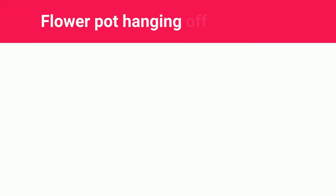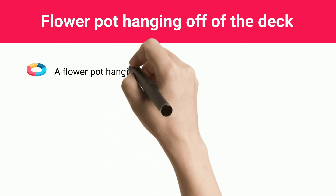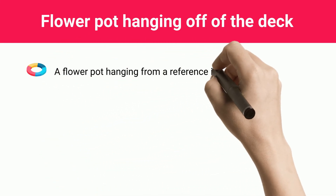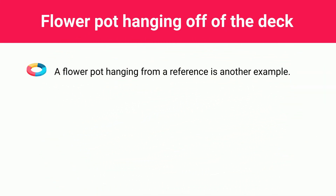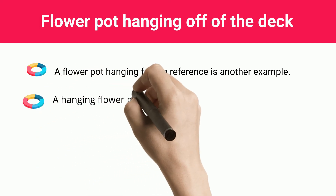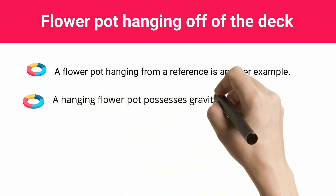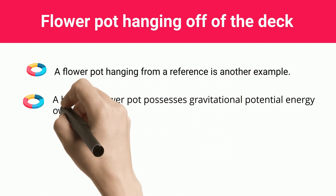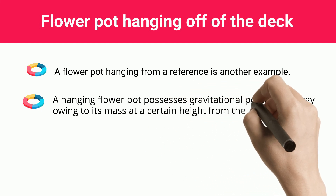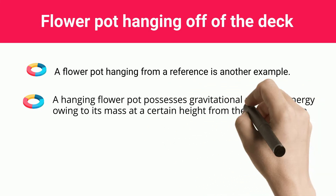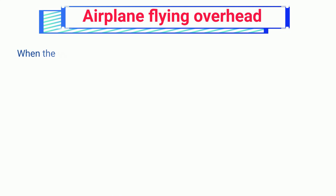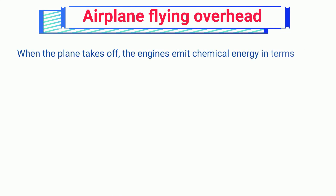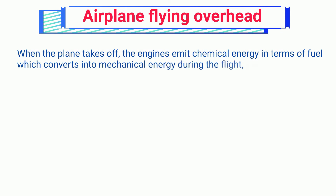A flower pot hanging from a reference point is another example. A hanging flower pot possesses gravitational potential energy owing to its mass at a certain height from the ground or the datum.